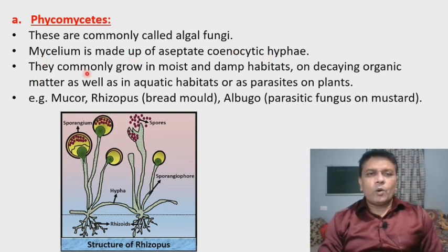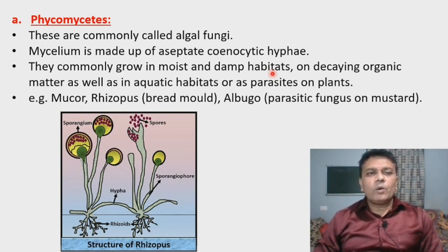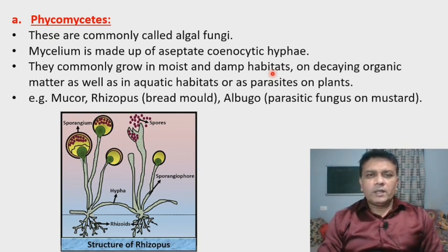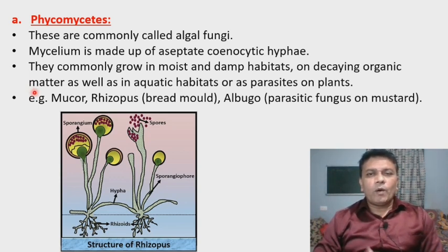Phycomycetes commonly grow in moist and damp habitats — the place where a living organism is found. They grow in moist, low-light conditions on dead, decaying organic matter, showing a saprophytic mode of nutrition, while some show a parasitic mode of nutrition.